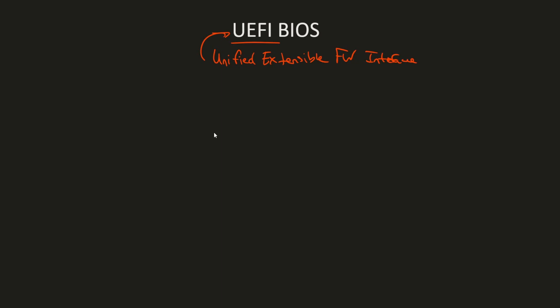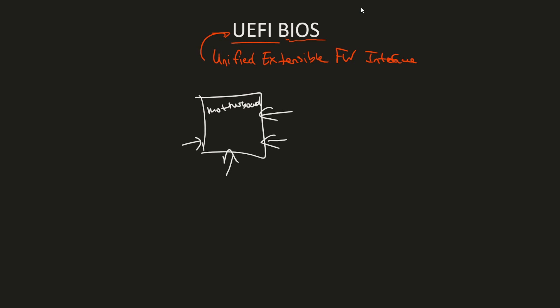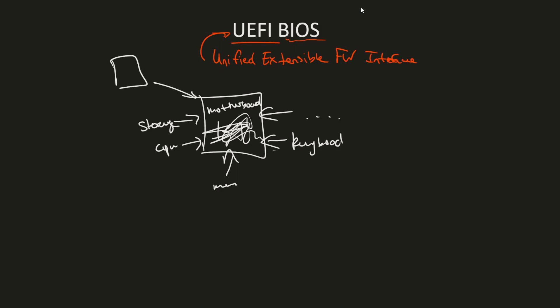In order to understand what UEFI BIOS is, we need to understand what BIOS is in general. All computers have some sort of motherboard, which allows all sorts of peripheral devices, including your CPU, storage disk, memory, keyboard, and much more, to all communicate with each other through basically a data bus or a mess of traces on a circuit board. BIOS is a piece of firmware that usually exists on something like a double EEPROM — just think of it as some memory that resides on the motherboard and helps your computer start up.